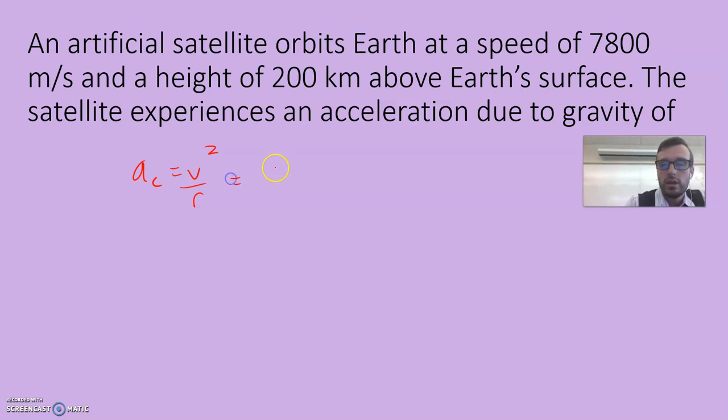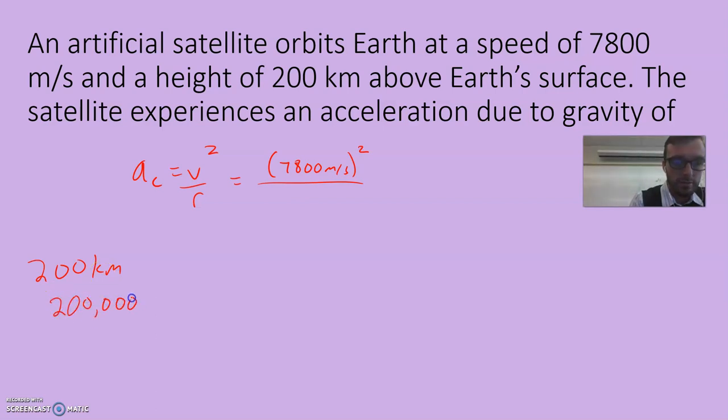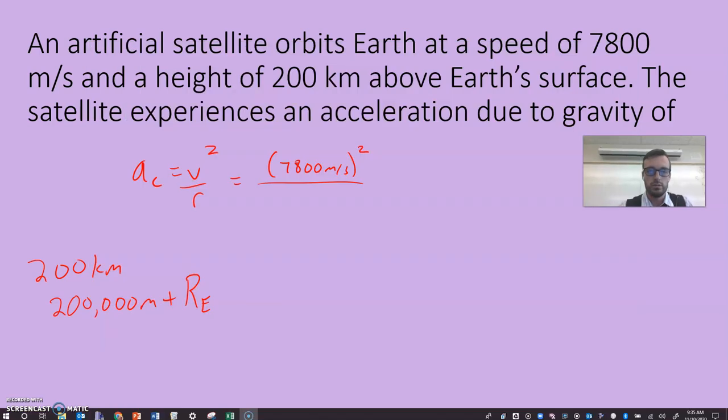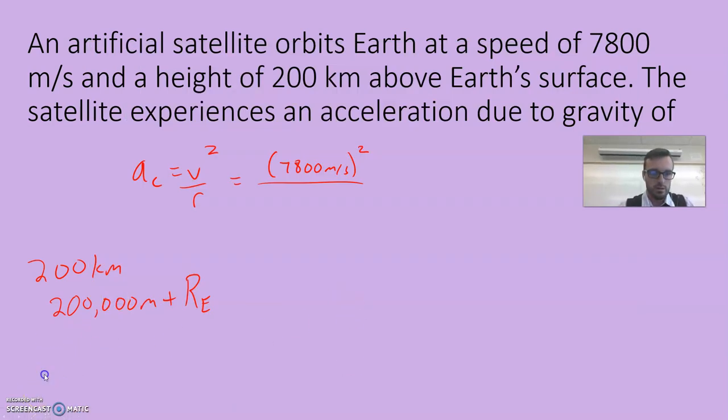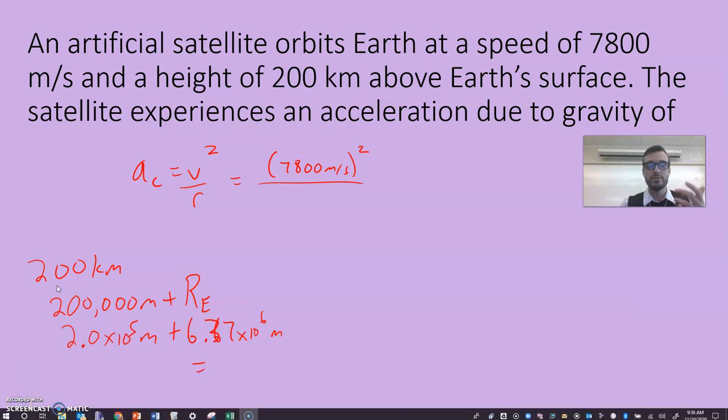We have 7,800 meters per second squared over R. Keep in mind, 200 kilometers above the Earth's surface. Not orbital radius, but above the Earth's surface. So that is going to be 200,000 meters plus whatever the radius of the Earth is. I'm going to go take a second to look that up for you.